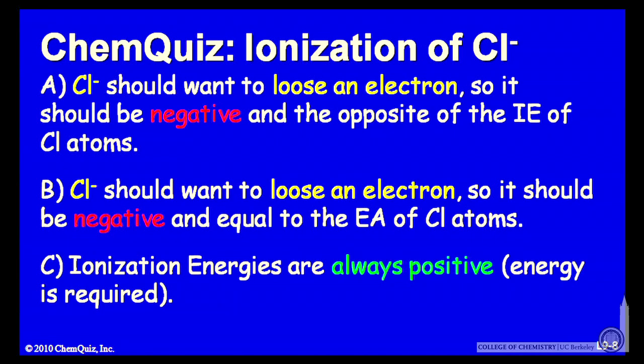Let's look at a possible explanation for each of the answers. A, Cl minus should want to lose an electron, so it should be negative and the opposite of the ionization energy of Cl atoms. Or B, Cl minus should want to lose an electron, so it should be negative and equal to the electron affinity of Cl atoms.